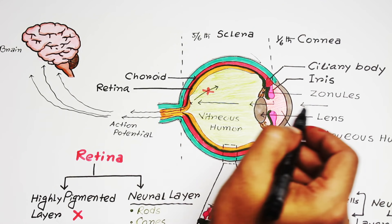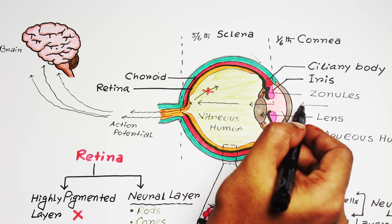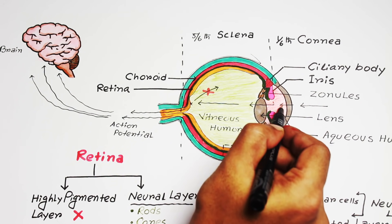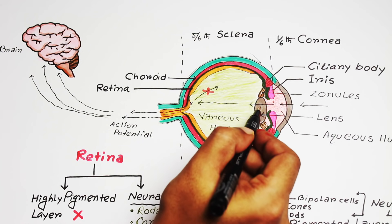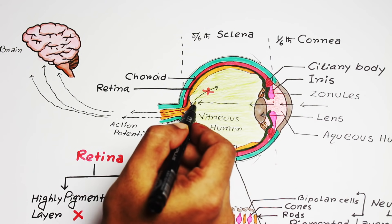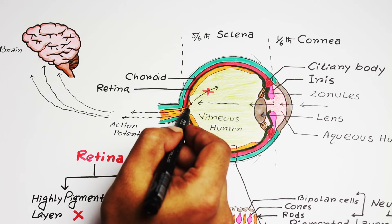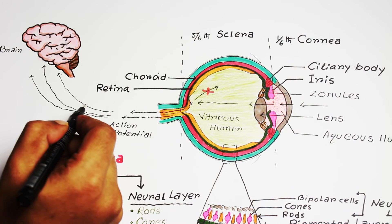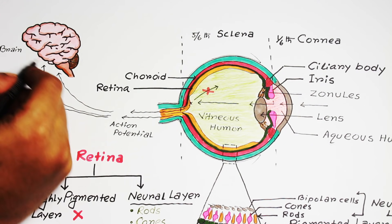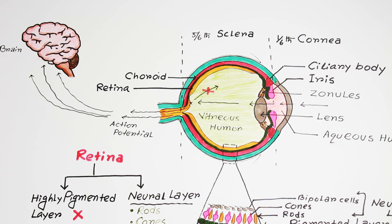So, when light is entering the eyeball, first it has to pass through the cornea, then through the aqueous humor, then through the lens and then through the vitreous humor and eventually falls on the retina, which finally converts it into action potential and goes to the CNS through the optic nerve.